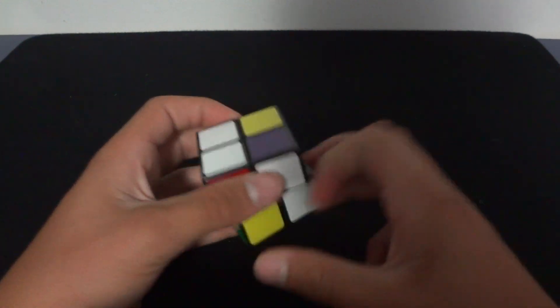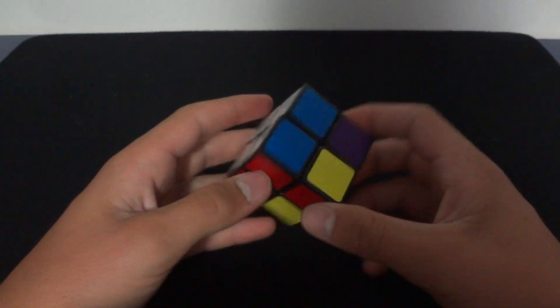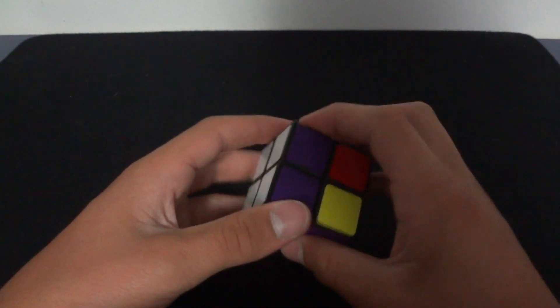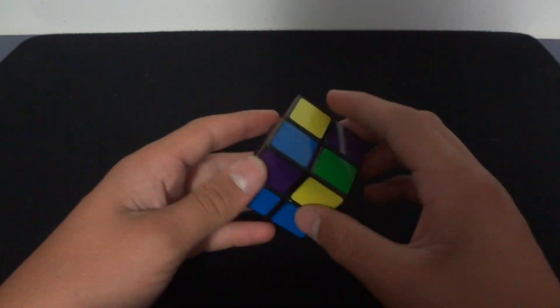So now I've moved this one over here, and all you have to do is repeat what you learned in step one to get four. Go with the color, twist, line up, and go up. See now I have all the pairs. If you had all the pairs to begin with, you're already done with step two.